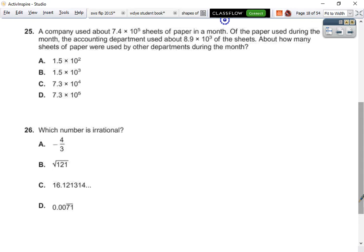Number 25. A company used about 7.4 times 10 to the 5th sheets of paper in a month. Of the paper used during the month, the accounting department used about that much of sheets. How many more sheets of paper were used by other departments during the month? Alright, so we have 7.4, 1, 2, 3, 4, 5. So we have 740,000.